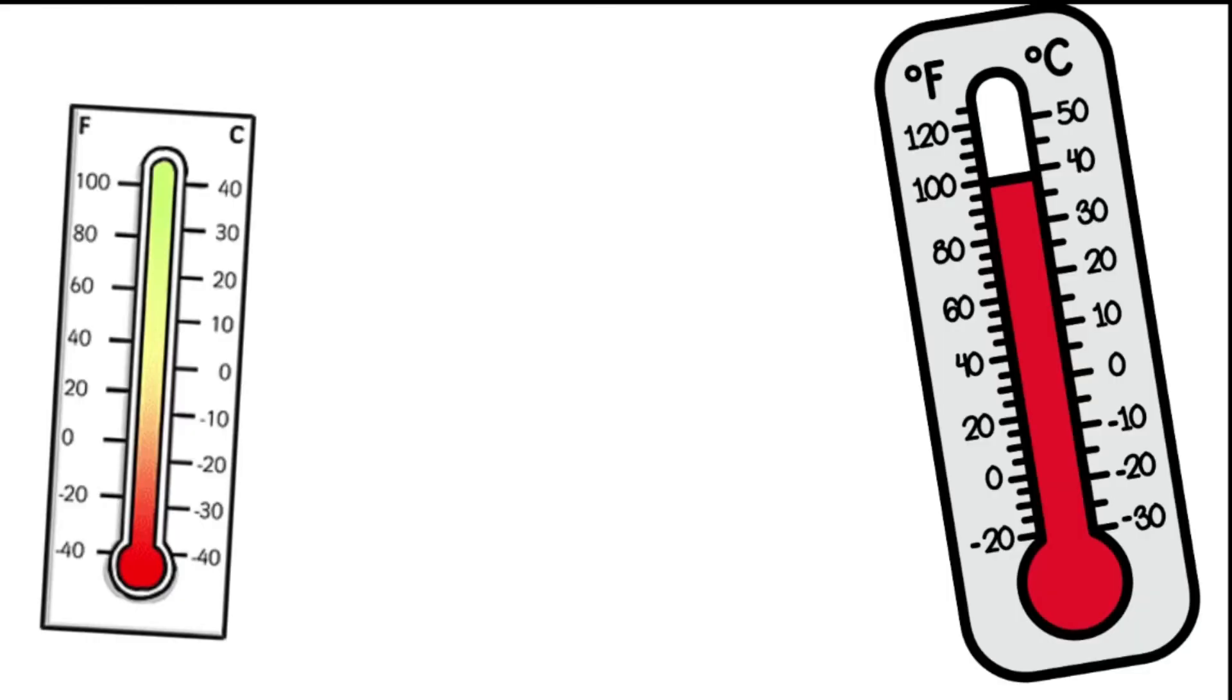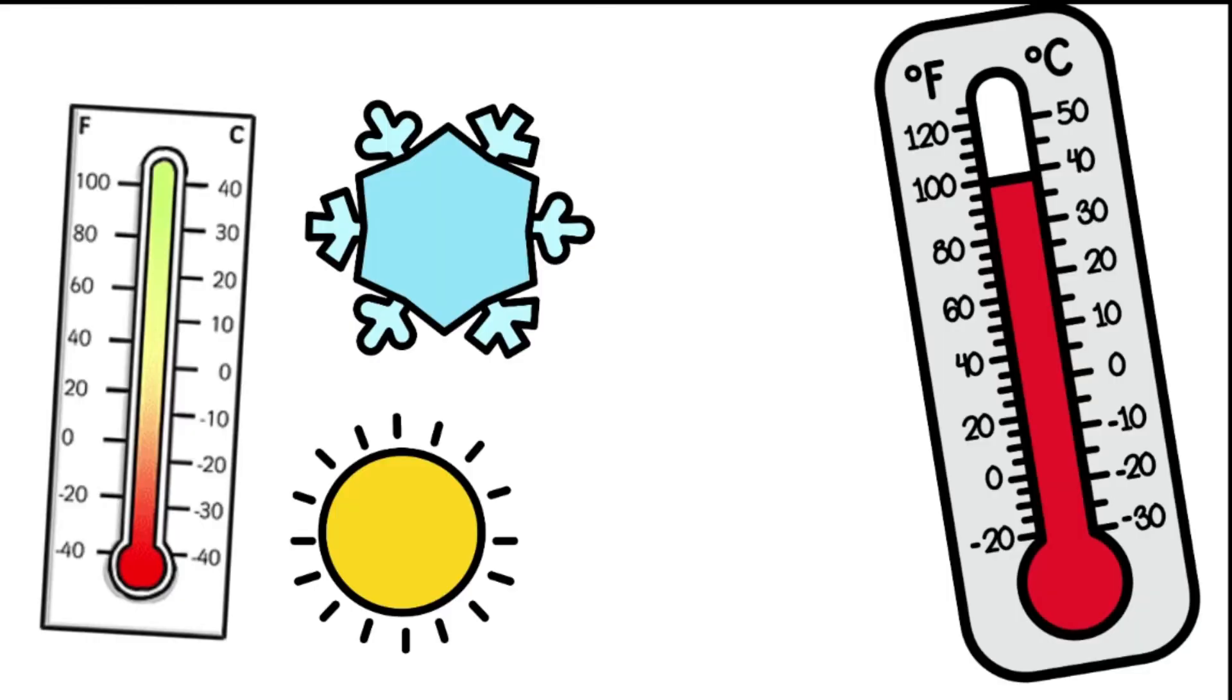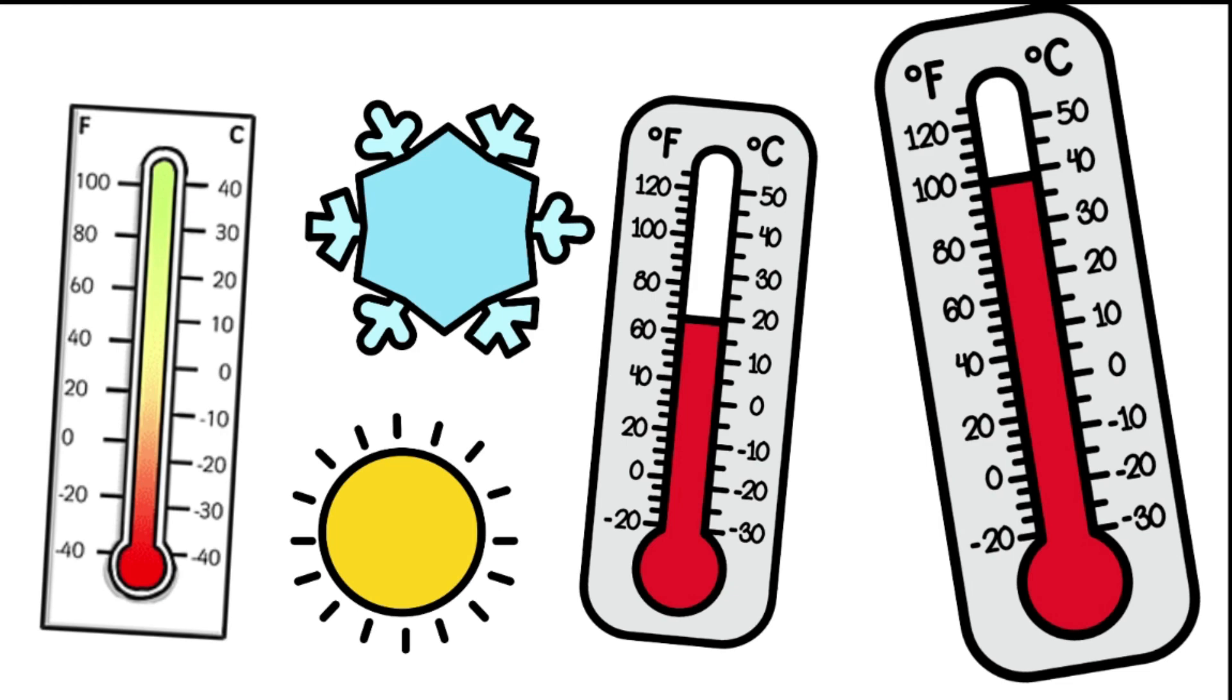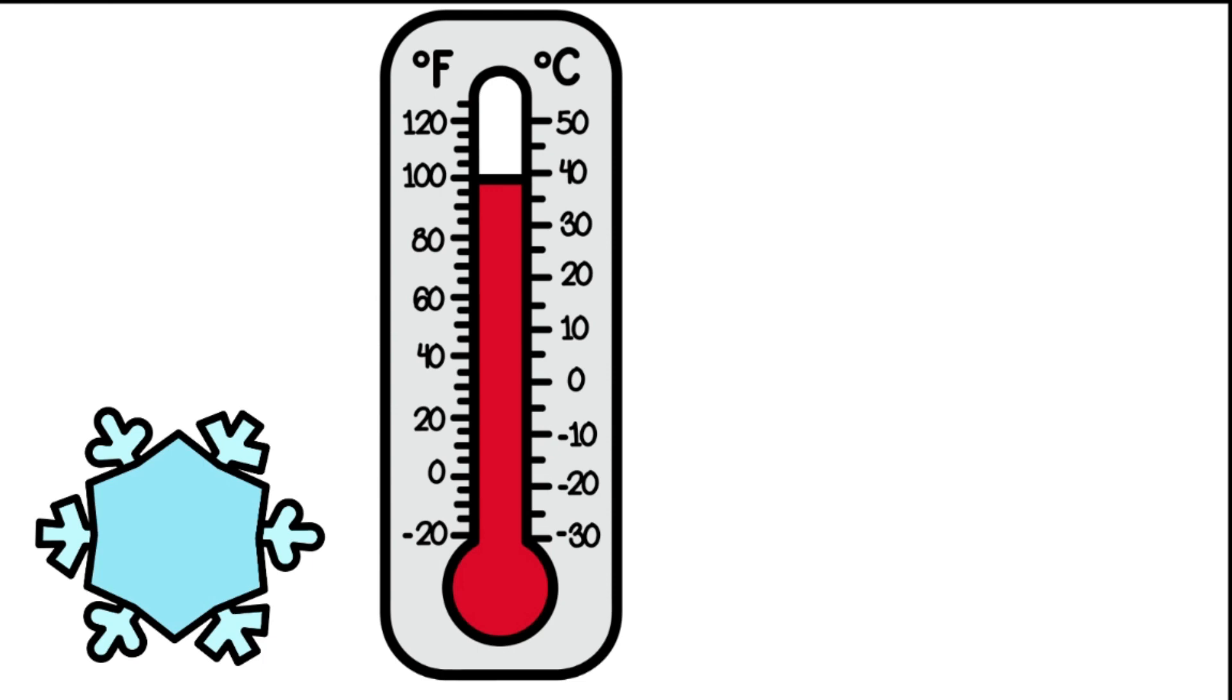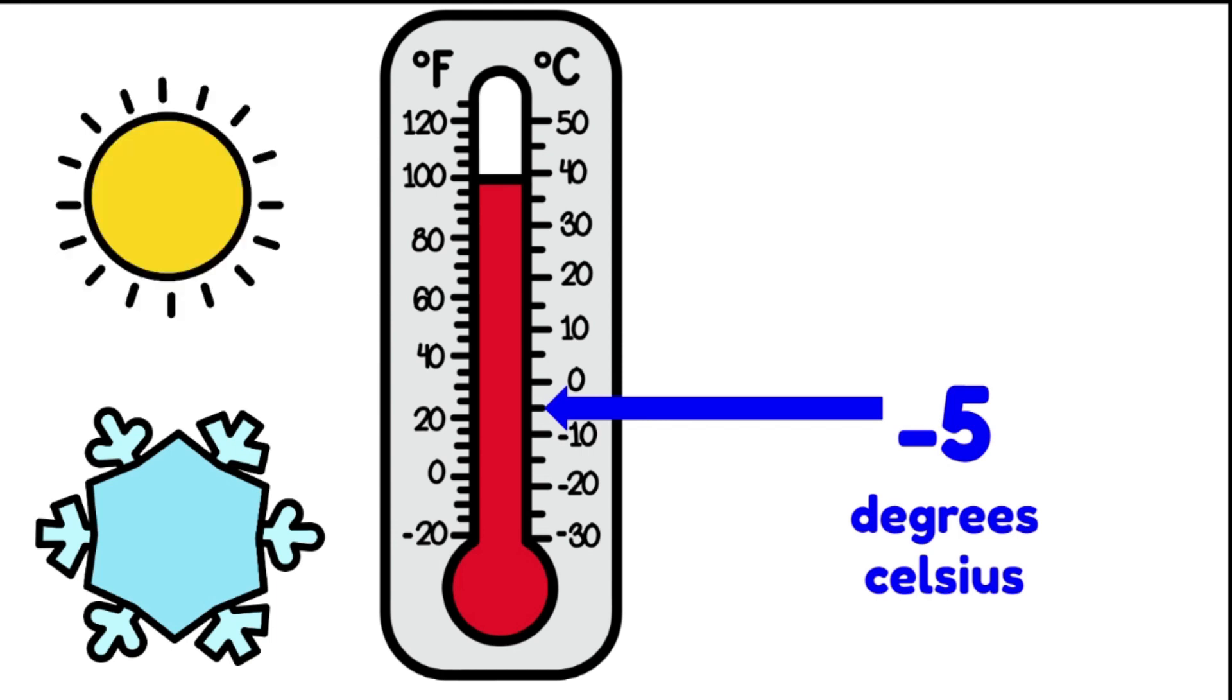Another way we can use both positive or negative integers is looking at temperature. Zero is the freezing temperature of water. So if we have a look at a day, we could have a freezing cold morning of minus five degrees Celsius, but by lunchtime it has warmed past the zero to twenty degrees Celsius. This is using both positive and negative integers to look at measurement.